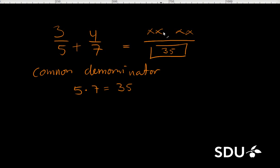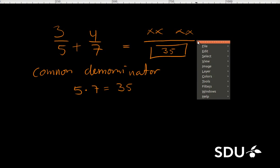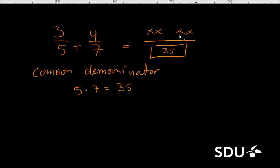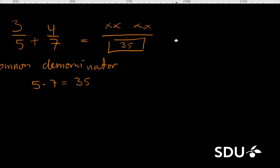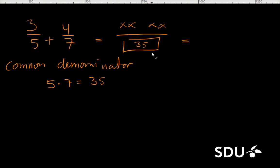And then we need to figure out what should be on top up here. I would like to shift it here. So to get from 5 to our common denominator we can multiply by 7. So we can say 3 times 7 divided by 5 times 7, plus, and then to get 7 to 35 we need to multiply with 5. Yes, and that's 4 times 5 and 7 times 5, and then we can reduce this.